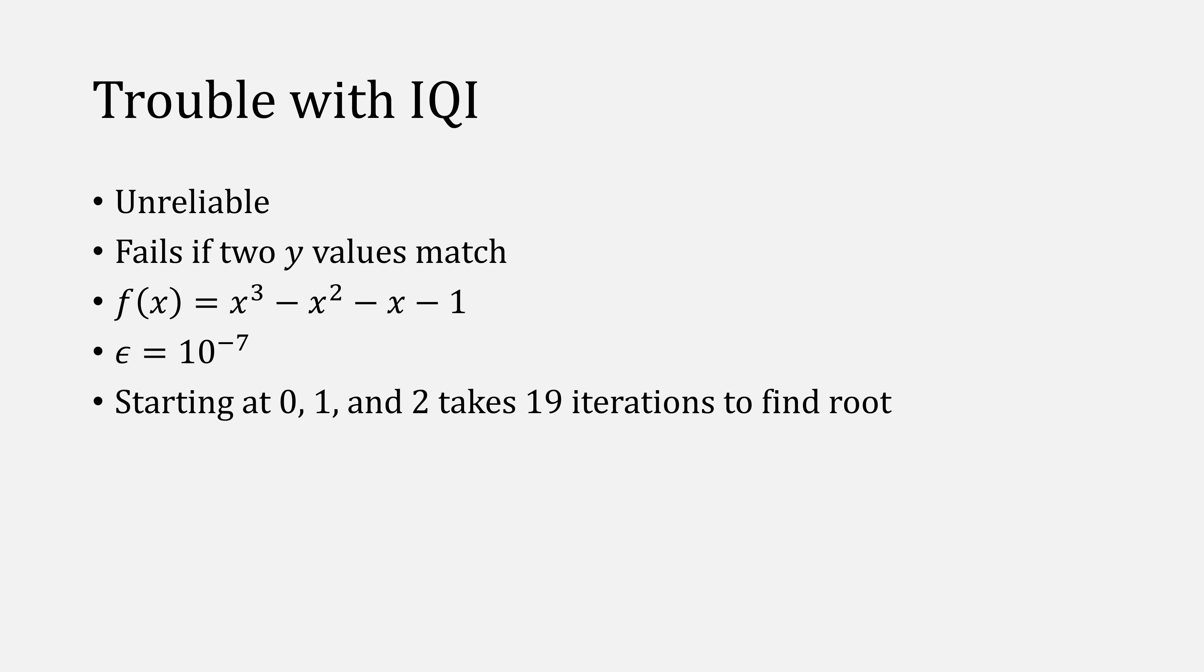You have to start close. In this case we'll start at one, one and a half, and two. Now it only needs five iterations to find the root. It is very finicky like this. That's why it's only ever used safely as part of Brent's method.